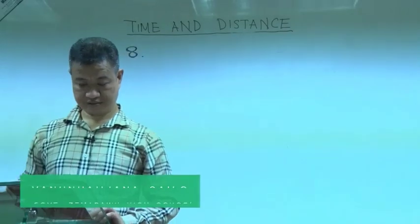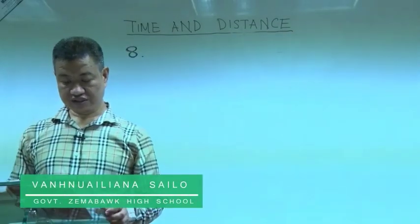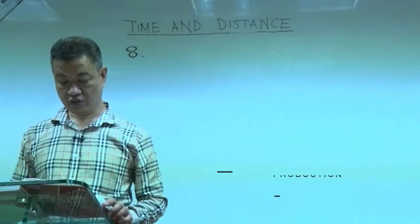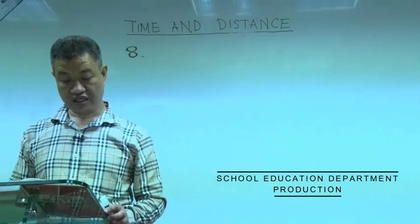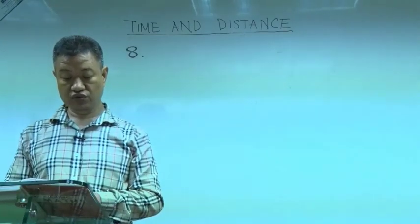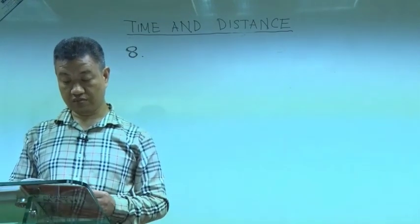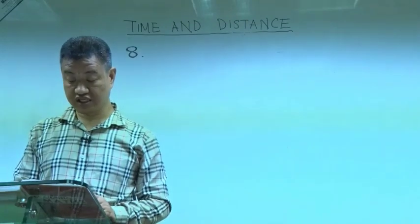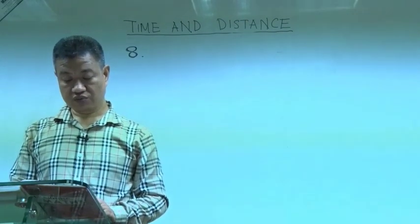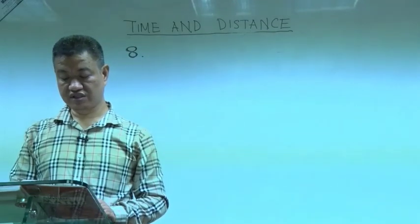Question number eight. In a train, Mia can count 41 telephone posts in one minute. If they are known to be 50 meters apart, then at what speed is the train traveling?